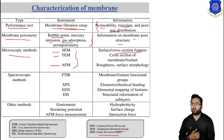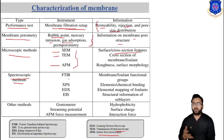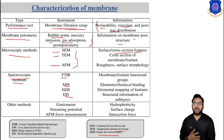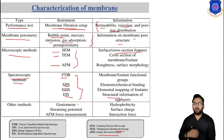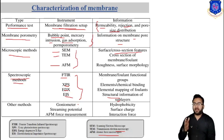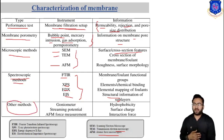Spectroscopic methods are also used for membrane characterization, including FTIR (Fourier transform infrared spectroscopy), XPS (X-ray photoelectron spectroscopy), EDX (energy dispersive X-ray), and EIS (electrochemical impedance spectroscopy). Using these techniques we can characterize the membrane and foulant functional groups, elements, chemical bonding, element mapping of the foulant, and structural information on the sublayer.